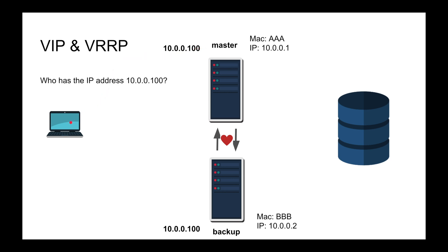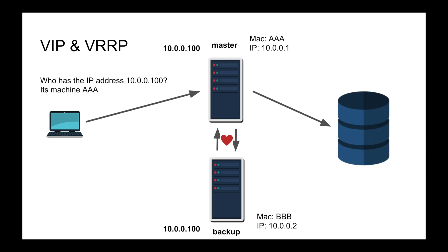If the client asks 'who has IP address 10.0.0.100?' it broadcasts to everybody on the network. The backup node receives that question and says: yes, I do have 10.0.0.100, but I am not the master node for this virtual IP — so I'm just going to drop that question. The master node receives it and says: yes, I'm your main, and it responds with MAC address AA, puts the destination MAC as AA, destination IP as 10.0.0.100, and sends that over.